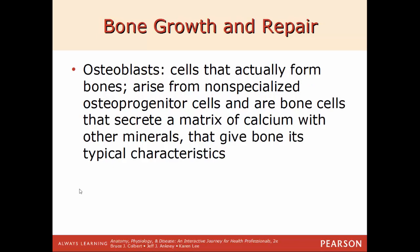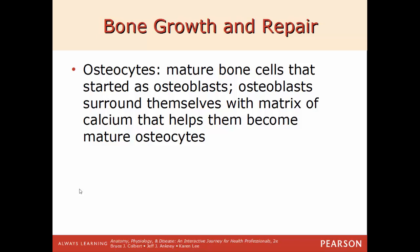Osteoblasts are the cells that actually form and build up bones — B for blast, B for build up. These are derived from the non-specialized osteoprogenitor cells and will secrete a matrix of calcium and other minerals that give bone its typical characteristics. Osteocytes are the mature bone cells that start off as osteoblasts. Once those osteoblasts surround themselves with a matrix of calcium, it matures them into a full-fledged bone cell — an osteocyte.